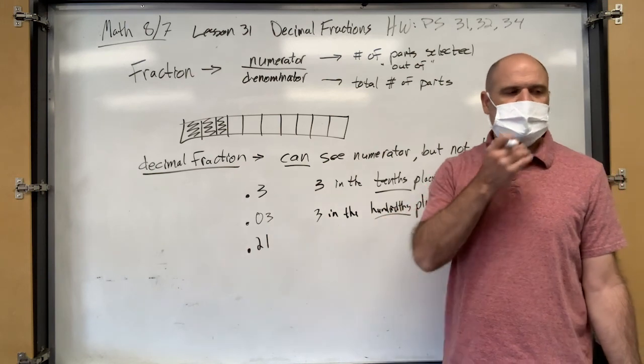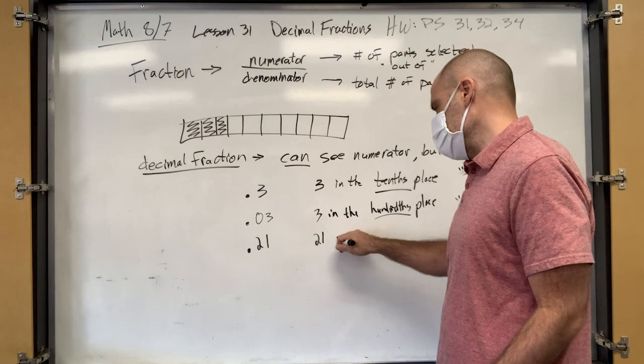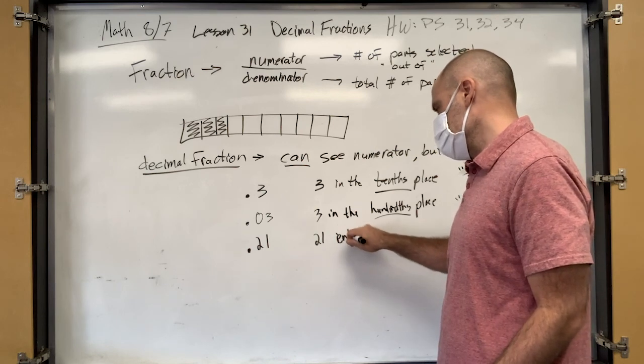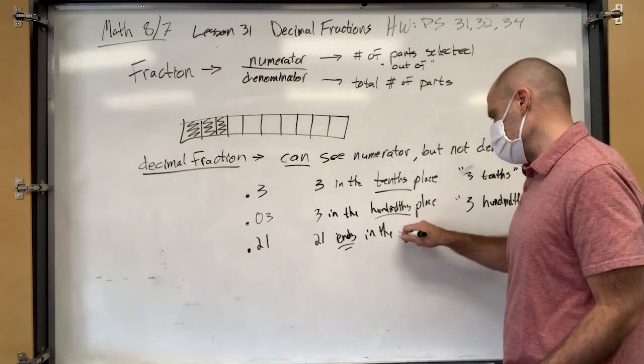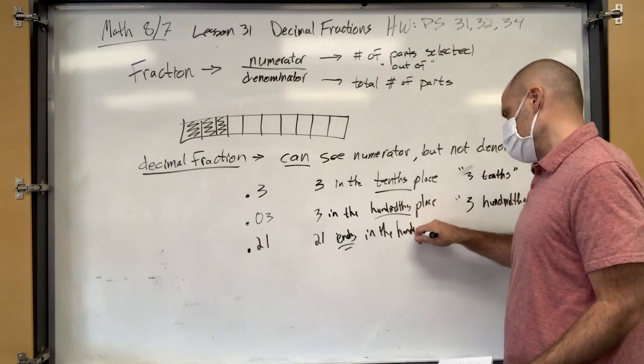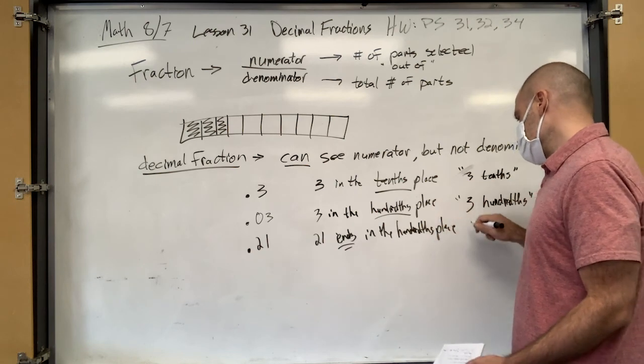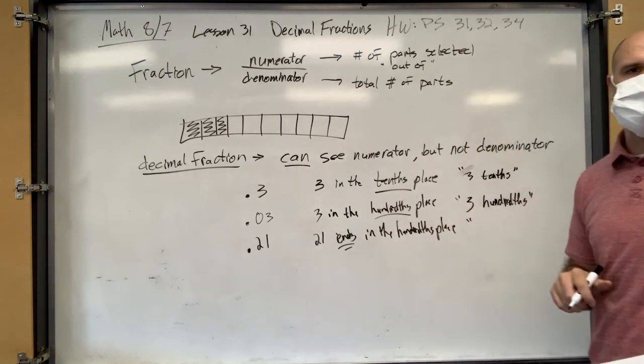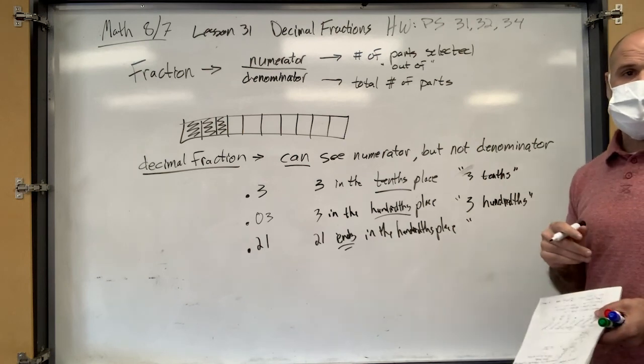Twenty one ends in the hundredths place. So you have to spit, because otherwise it sounds like hundreds place. Hundreds. But there's a very big difference. Hundreds and hundredths.